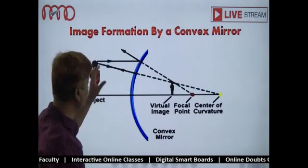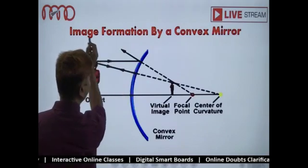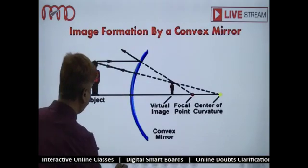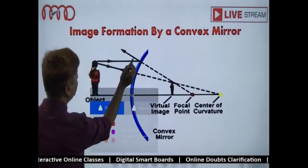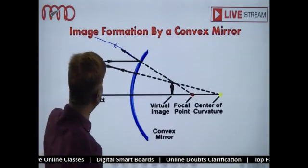of this particular object - two diverging rays. Upon reflection, this particular ray is reflected like this, correct. So this is reflected over here. And similarly, the other ray is also there which